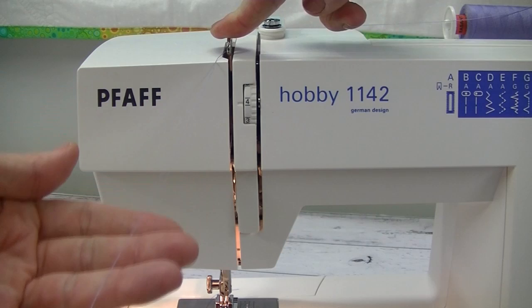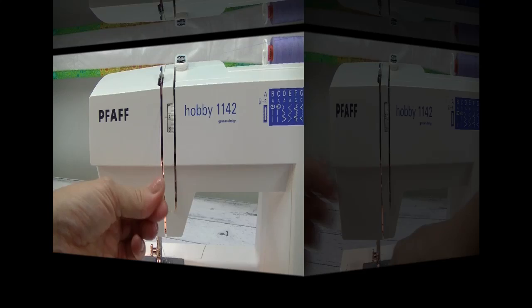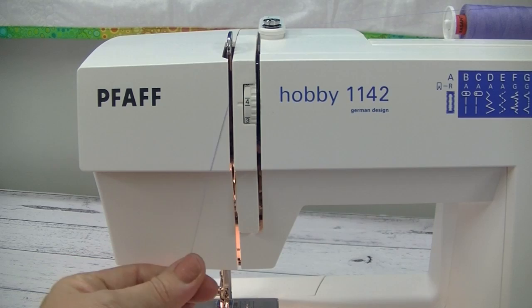At this point here, it's a good idea to lower your presser foot, and what that will do is it will prevent the thread from continually coming off the spool. From this point here, we take our thread down and through the top of the needle guide.